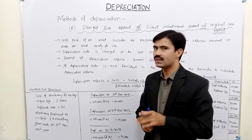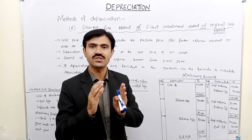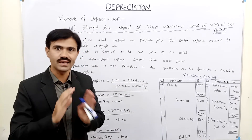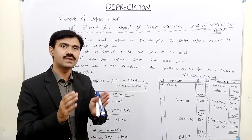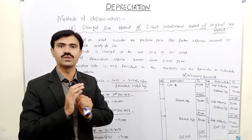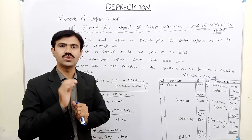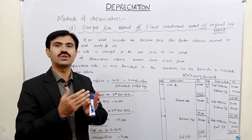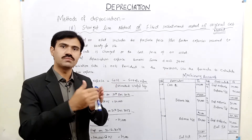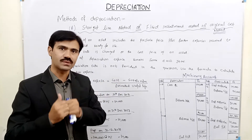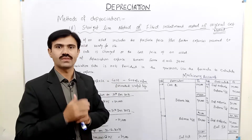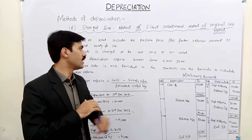If the depreciation rate is not given in the question, then we will use the formula. The formula is: Depreciation Expense = (Cost − Scrap Value) ÷ Estimated Useful Life.